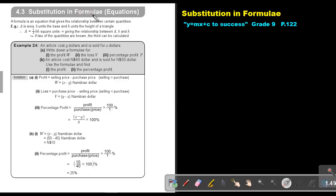Substitution in formulae or equations. A formula is an equation that gives the relationship between certain quantities. A is area, B units the base, and H units the height of a triangle. Therefore, A equals half base times height square units, giving the relationship between A, B, and H. If two of the quantities are known, the third can be calculated.